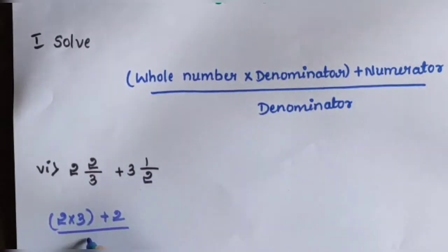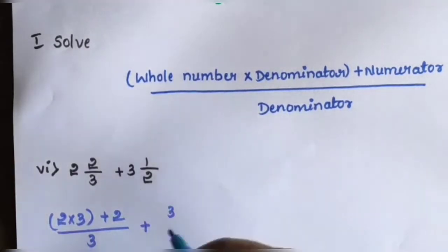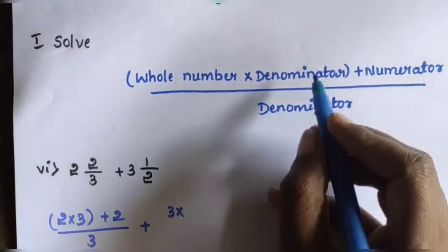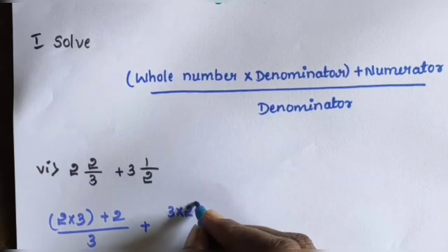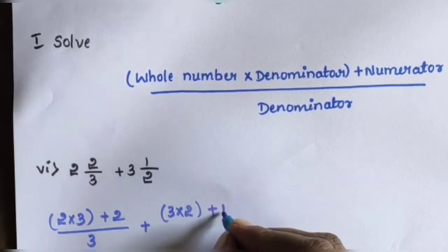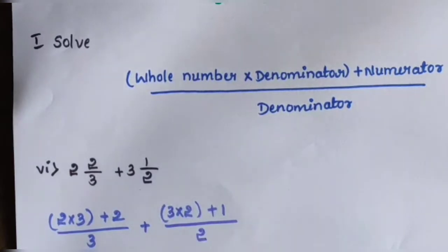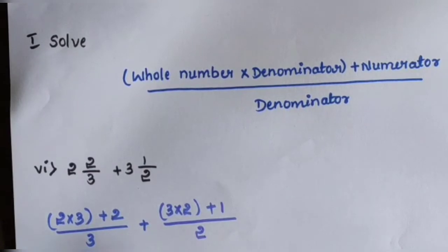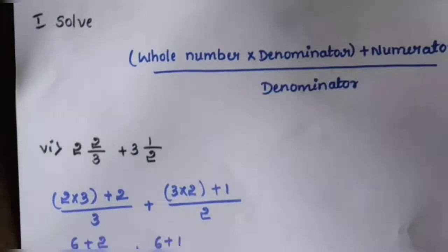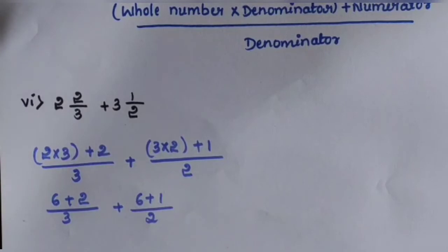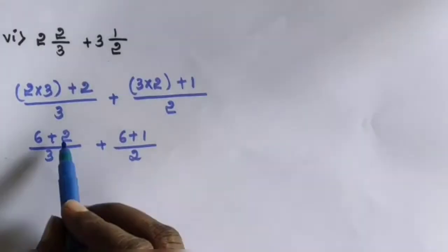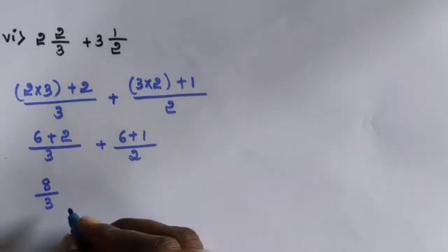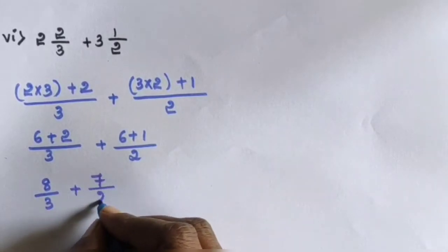Using the same formula for 3 and 1/2: 3 is the whole number, 2 is the denominator, and 1 is the numerator. So: 3 into 2 plus 1, divided by 2. This gives us 6 plus 2 divided by 3, which is 8/3, plus 6 plus 1 divided by 2, which is 7/2.